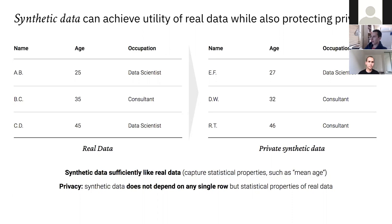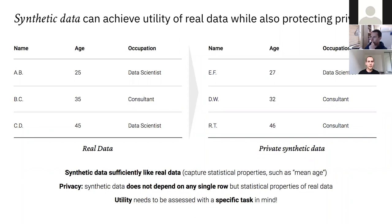When assessing synthetic data, you always have to think of a specific task in mind — utility always needs to be assessed with a specific task. In this example, the mean age comes out the same, but the fraction of data scientists differs: in the real data we have two-thirds, but in the synthetic data only one-third. So this synthetic data set would be great for computing mean age but not so good for finding the fraction of data scientists in the population.